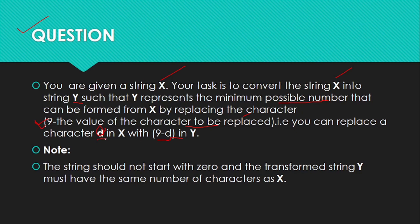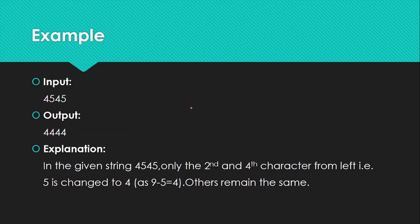Now let's see the note section. Each string should not start with zero, and the transformed string Y must have the same number of characters as X. So your main task is to find the minimum possible number following three things: use the formula 9 minus d, the string should not start with zero, and maintain the same number of characters in X and Y.